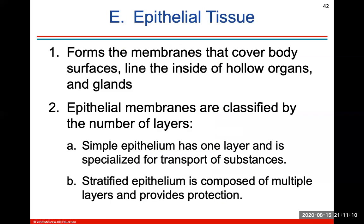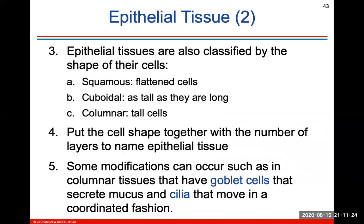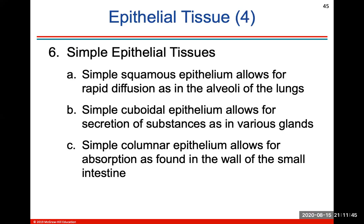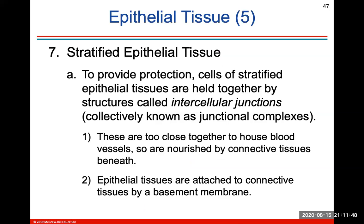Epithelial tissue is probably one you remember from anatomy — it's extremely broad. Epithelial membranes are classified by the number of layers: simple has one layer, and stratified has several layers of cells. They're also classified by their shape. Some modifications include columnar tissues with goblet cells, some that secrete mucus, and cilia that move in a coordinated fashion. There's a chart of epithelial tissue you should know — it's a review from anatomy, so I won't go over it again here.